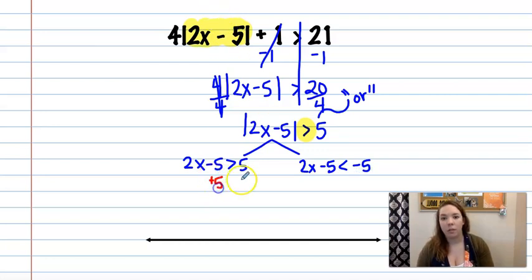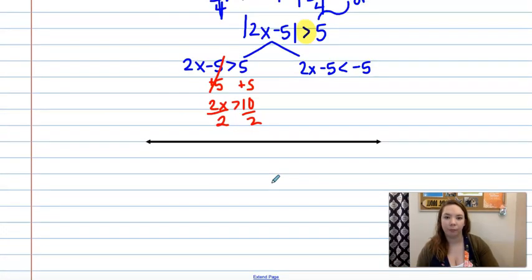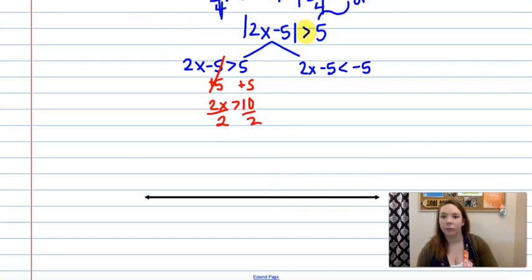So then you would solve these by adding 5 to both sides and dividing by 2 on both sides. So in this case, I get x is greater than 5. And then same thing on this one. Add 5 to both sides, divide by 2 on both sides. You get x is less than 0.